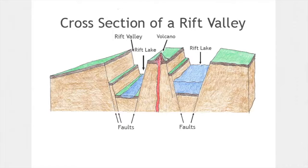Here you can see a cross section of a rift valley formed by the divergent movement of two continental plates. Note that water has collected at the bottom of these valleys, forming rift lakes.